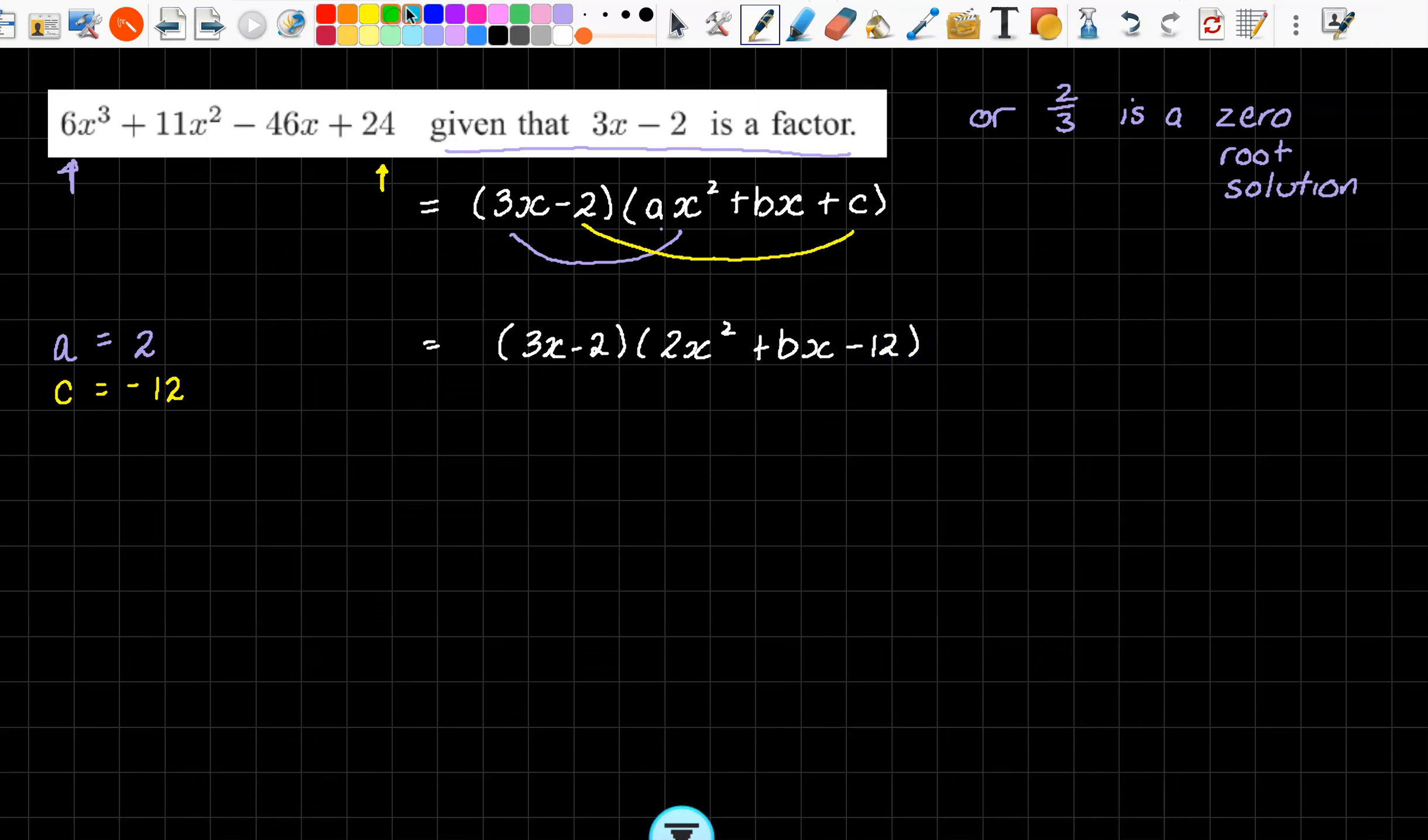Remember what we said from last time, once you've done that, let's write this. So that's going to be 3x take 2. What's the information we have? 2x squared. We still don't know the middle term. Take 12. Now we're going to try and find b.